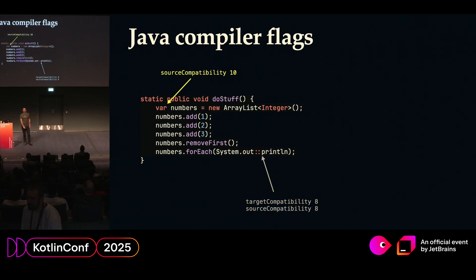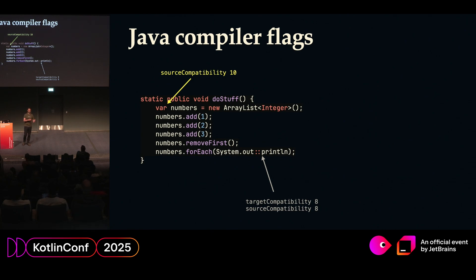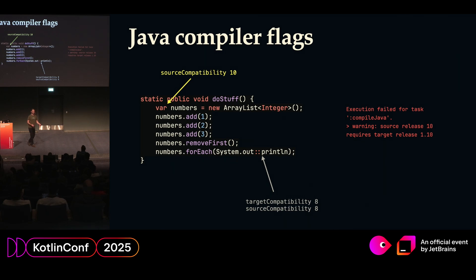Something else interesting is local variable type inference, which was introduced in Java 10. You could think of using source compatibility 10 and hoping to target a lower version with target compatibility 8. But that doesn't work, because Java always wants your source compatibility to be lower than or equal to target compatibility. You can cripple your Java source file and make sure you do not use any new syntax structure, but I'm not sure why you would.